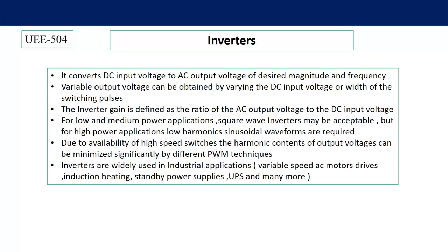The inverter converts DC input voltage to AC output voltage of desired magnitude and frequency. In our country we use 50 Hz frequency. For domestic applications, 230 volts; for industrial applications, 440 volts; and higher values can also be obtained. Variable output voltage can be obtained by varying the DC input voltage or switching pulses. The gain of the inverter is defined as AC output voltage divided by the DC source voltage.